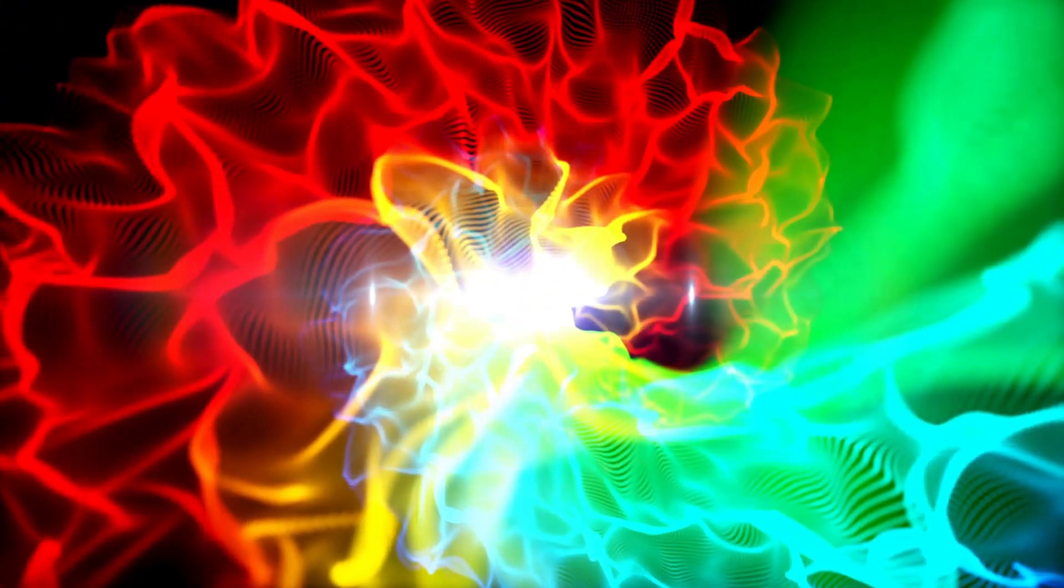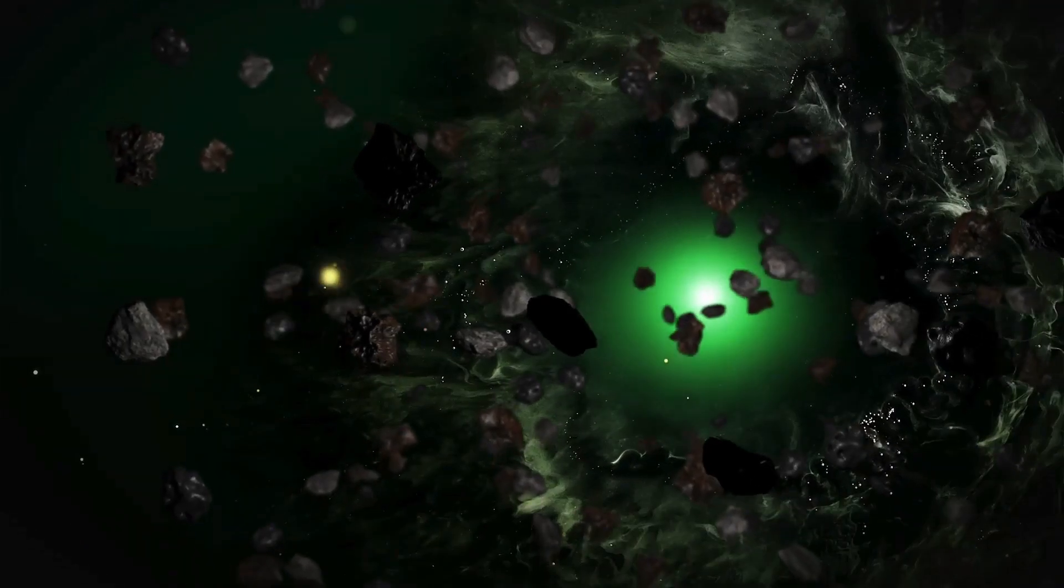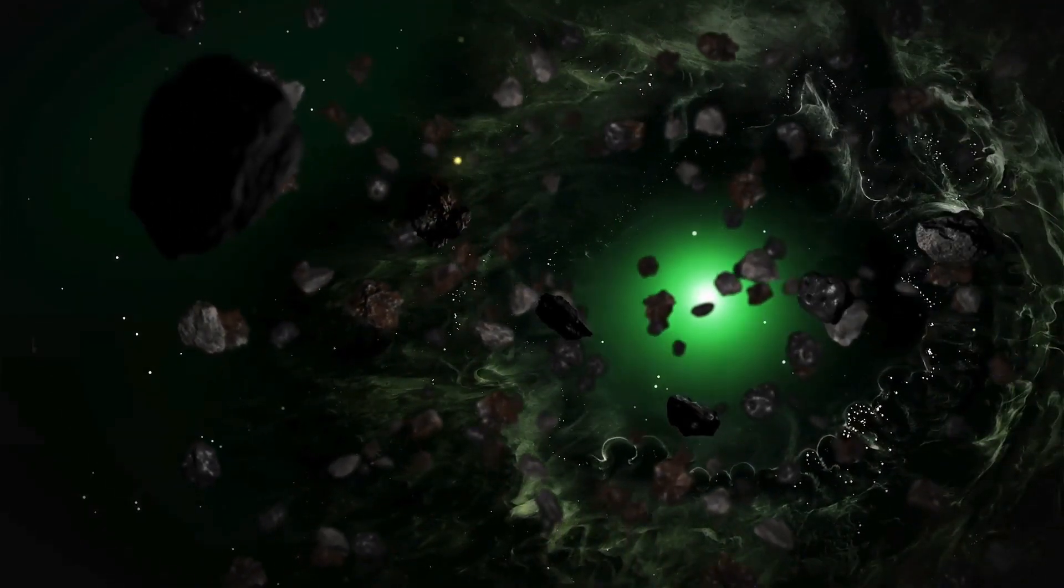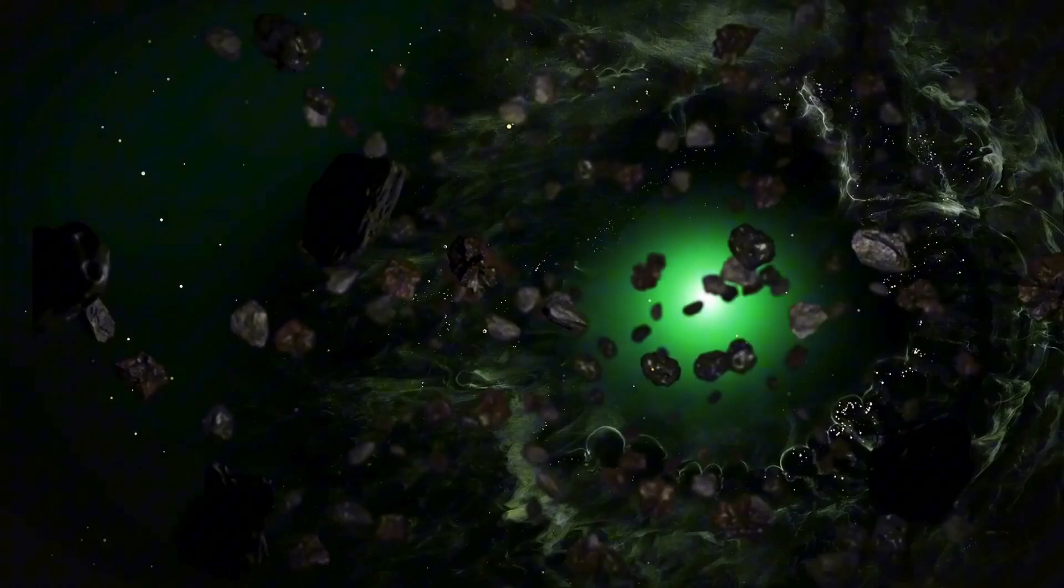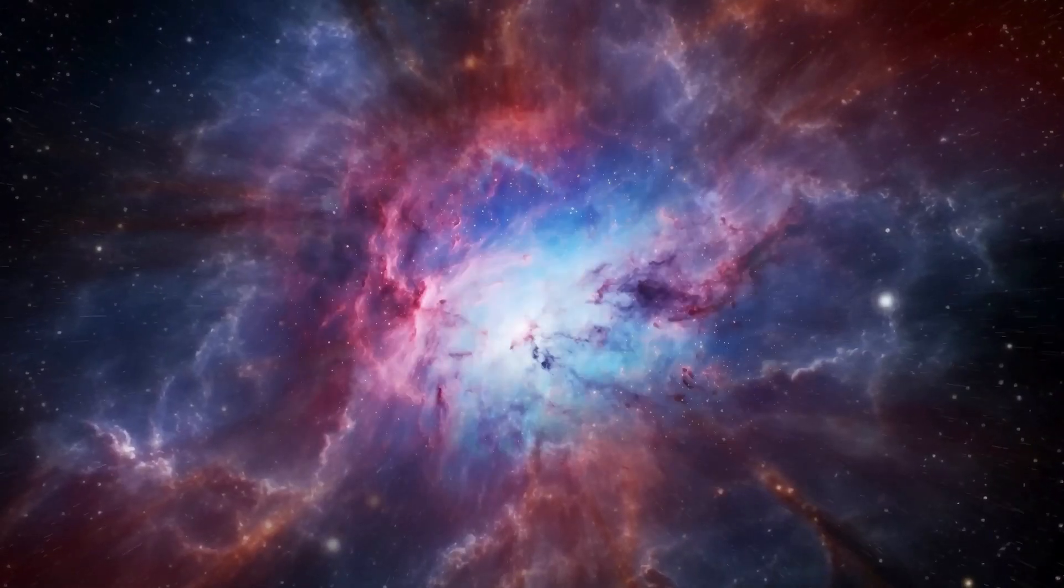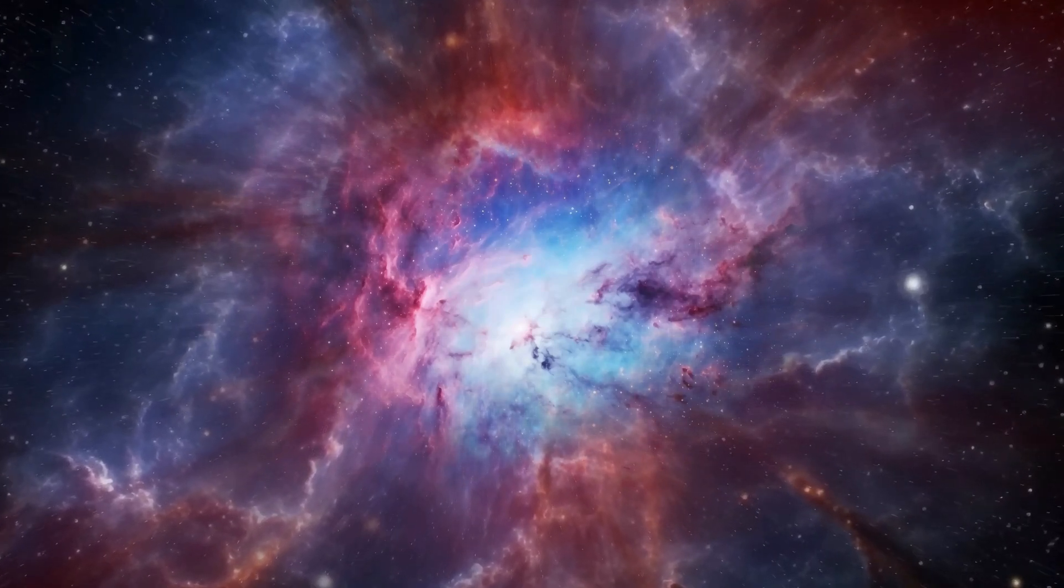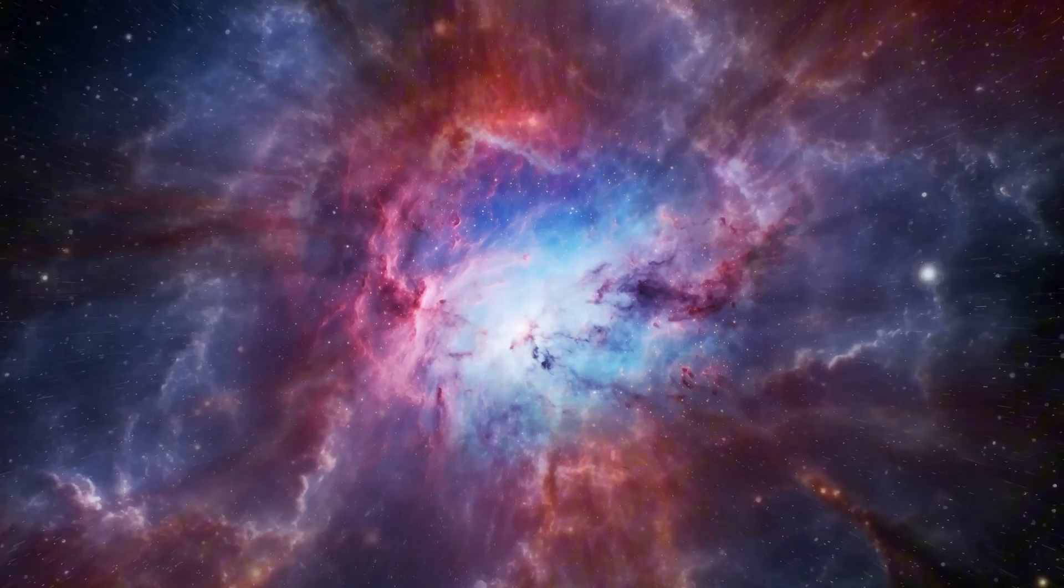However, the sun's magnetic field inversion is not an unexpected flip. Rather, it is a continuous process. As the solar cycle progresses, the sun's magnetic field undergoes a series of changes. At a certain point, the magnetic field becomes so twisted and tangled that it reaches a tipping point and begins to reconfigure itself, resulting in the flip.